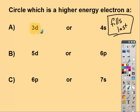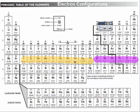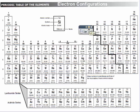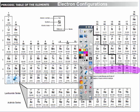Go ahead and try B and C on your own. Restart when you have your answer. So we have 5d and 6p. 6p fills later, so that must be higher in energy. And 6p or 7s, 7s fills later.